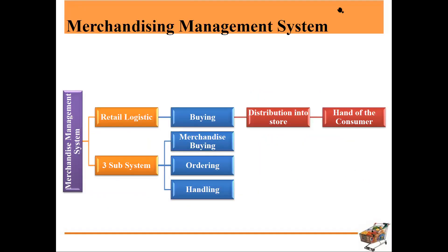When it comes to the merchandising management system, there are two key things. One is retail logistics — buying products, distributing them to stores, and then the customer buys and the product reaches their hands. There are also subsystems: merchandise buying, ordering, and handling. But our main focus is on retail logistics — buying the product, distributing it to stores, and then selling it to customers.